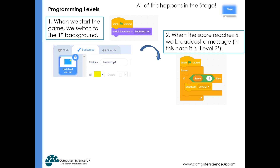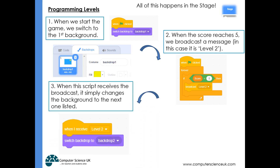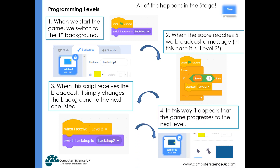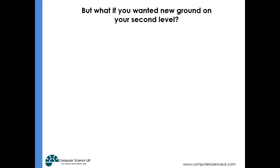Then we can have a script in our program that is constantly checking to see what the score is. If the score is five, we can broadcast a message, and another script is always listening out for that broadcast. The moment that broadcast happens, we're going to switch to another backdrop, and in this way the game will appear to progress onto different levels.